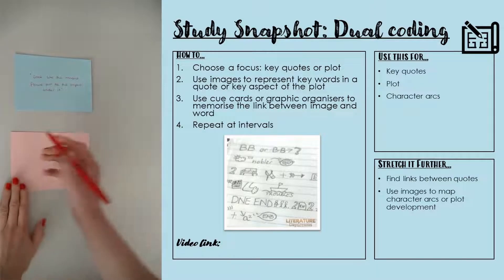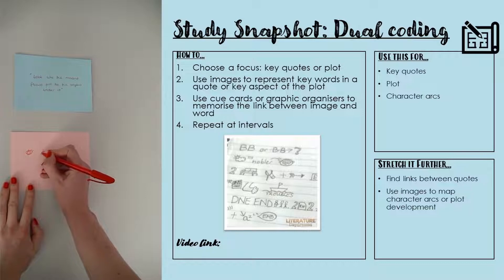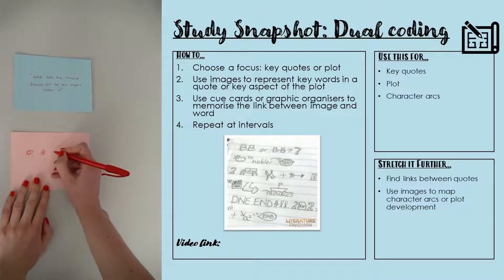So I might do something like: an eye for 'look like,' the innocent flower, but be the serpent. I'm a terrible drawer but I apologize.